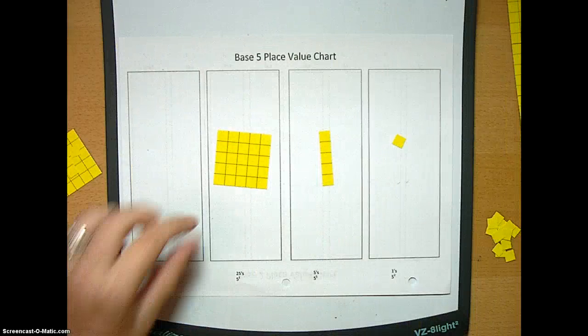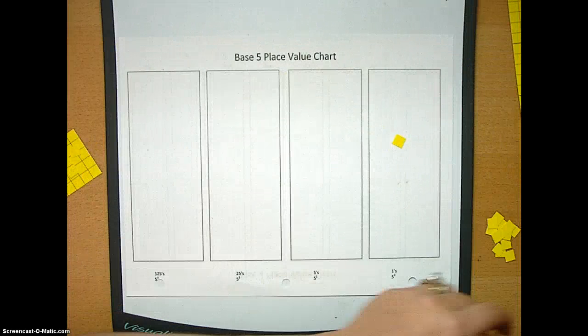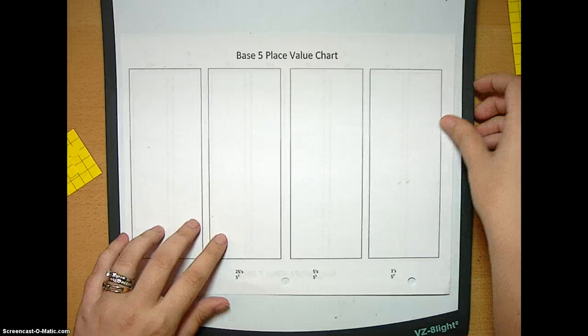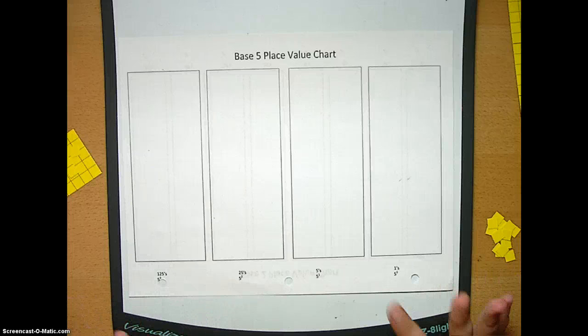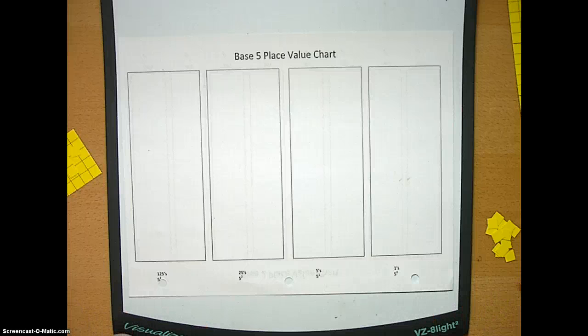So let's go ahead and start counting. So right now what we have is nothing. And if you remember, or if you even watched the last video, you know that the number five doesn't really exist in the world of base fives. Sometimes it's just not there. That's fine.